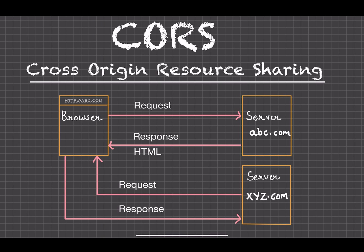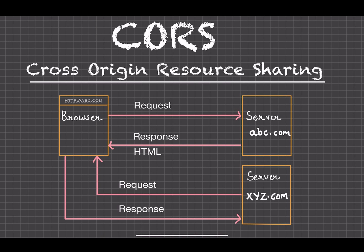In that script tag we are making an API request to a different domain — xyz.com. The request goes to the server, the server does its processing and sends back the response, but since it is from a different domain, the browser will block it. The response will not propagate into your JavaScript file. This is called the same-origin policy of the browser — it is a security feature.